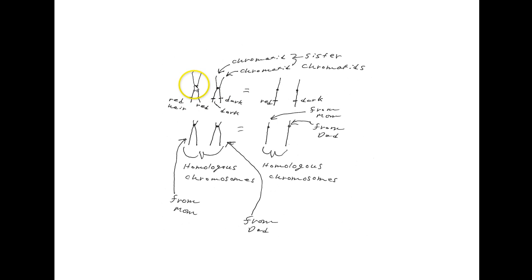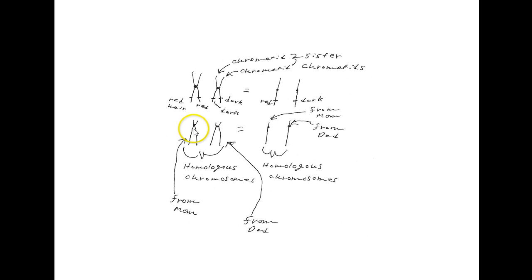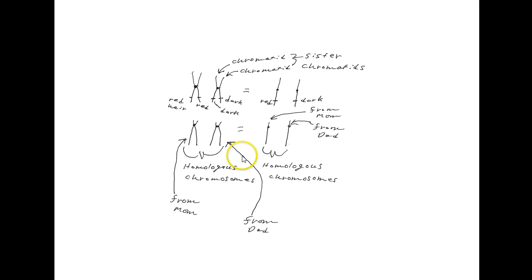This chromosome and this one right here form a homologous pair — these are homologues. They are the same structure, same size, and both have genes controlling hair color. But this one has a gene coding for red hair; over here the gene codes for dark hair. These two would also be a homologous pair — the centromere is up near the end. Most of the time chromosomes are single-stranded. One chromosome in a homologous pair is a copy from mom; the other is a copy from dad.